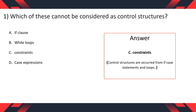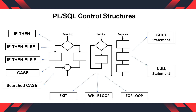The control structures are formed from If, Case statements, and Loops. PL/SQL has three types of control structures: Selection, Iteration, and Sequence. Selection includes If-Then, If-Then-Else, If-Then-ElseIf, Case Statement, and Searched Case Statement. Iteration includes Exit, While Loop, and For Loop. Sequence control structure includes GoTo Statement and Null Statement.